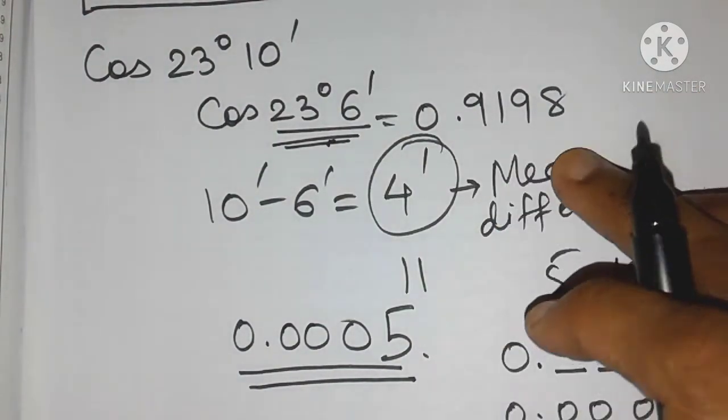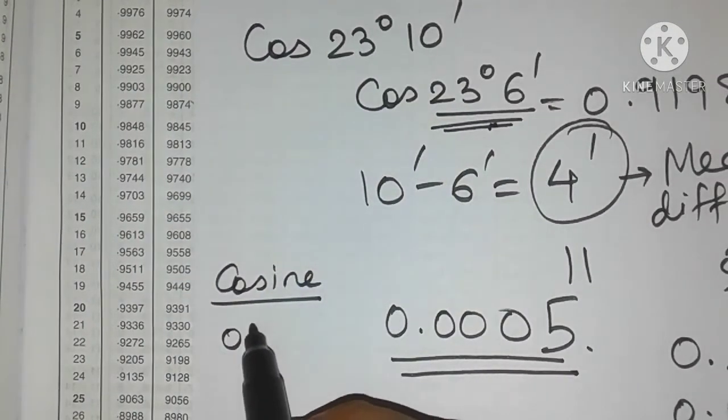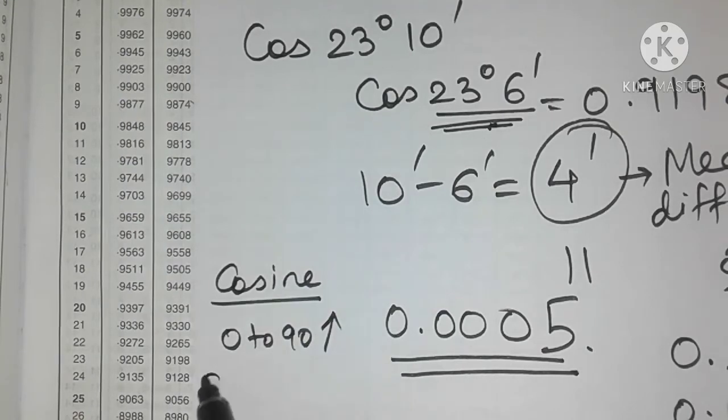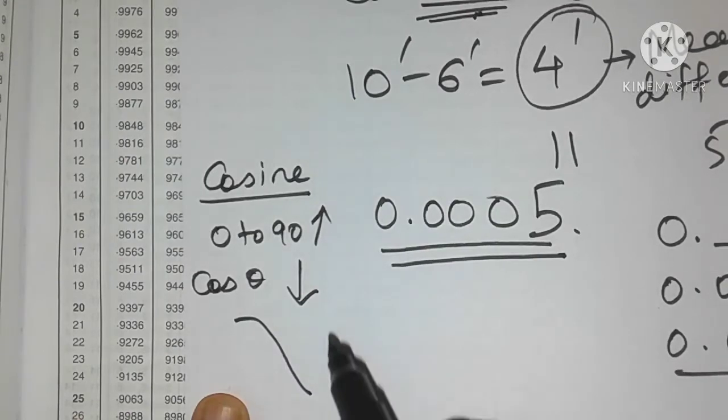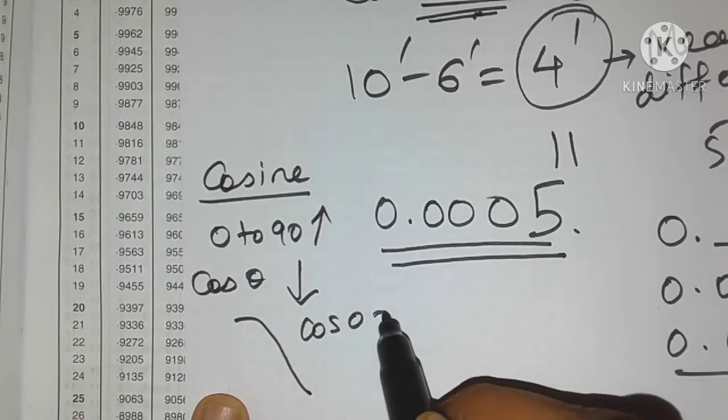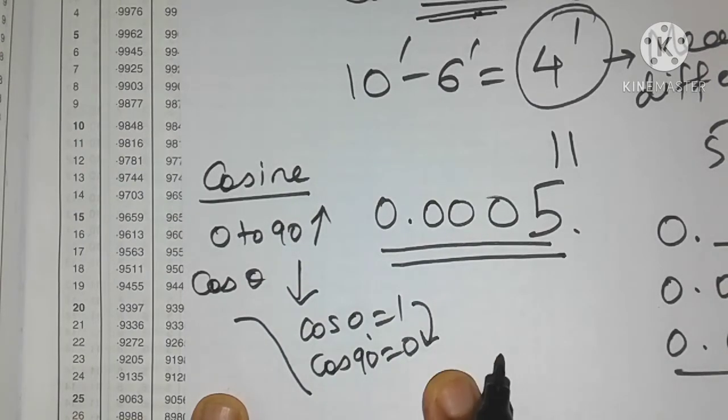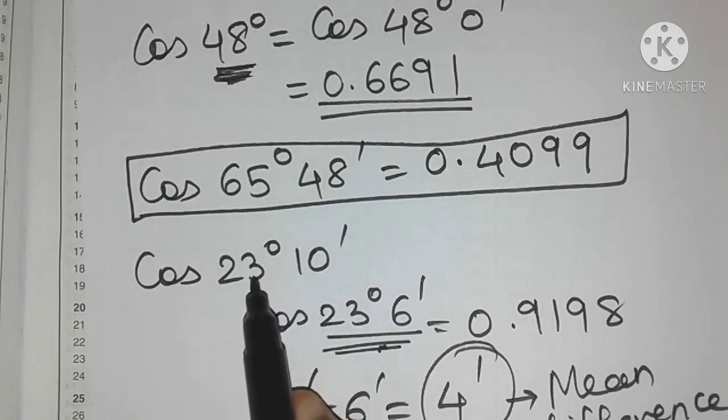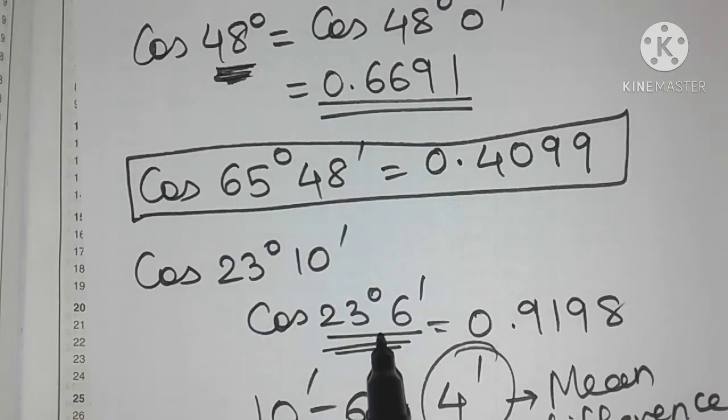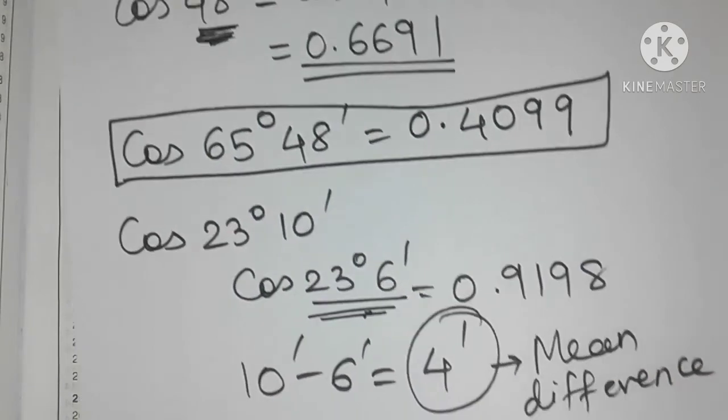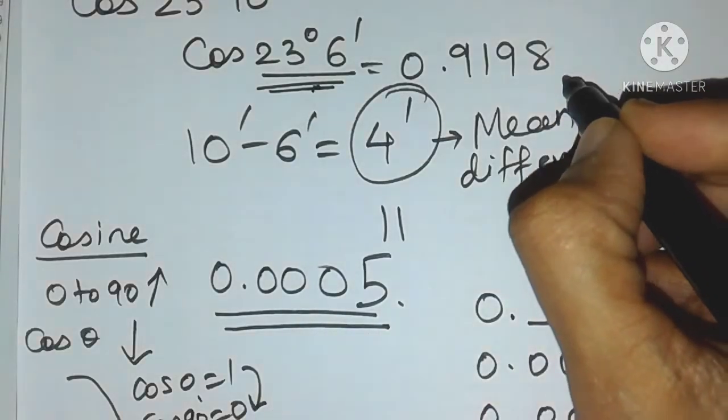So please be very careful you don't have to add it. Now you may ask why should I subtract? The reason is because friends, cosine graph if you see from 0 to 90 degrees, as the angle increases the cos value decreases. So it's actually a decreasing function. Cos of 0 is actually 1 and cos of 90 is 0. So the cosine value decreases friends. So cos of 23 degrees 10 minutes will actually be less than cos of 23 degrees 6 minutes and that's exactly the reason why we have to subtract this mean difference value from this cosine value.